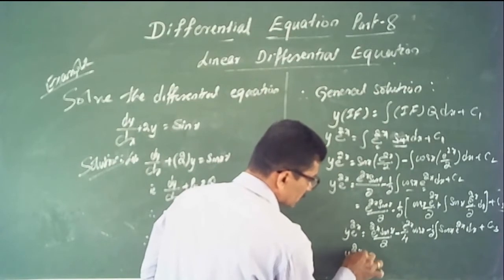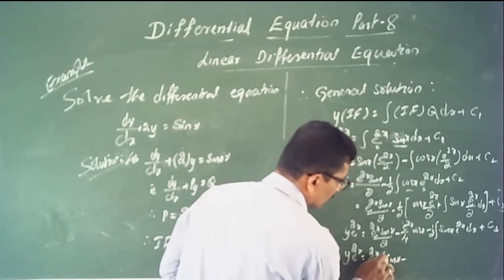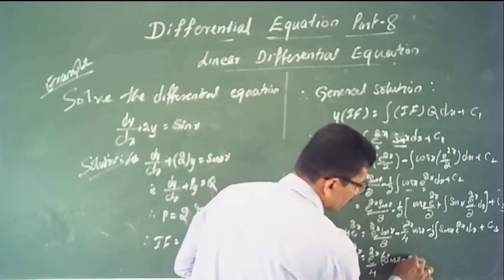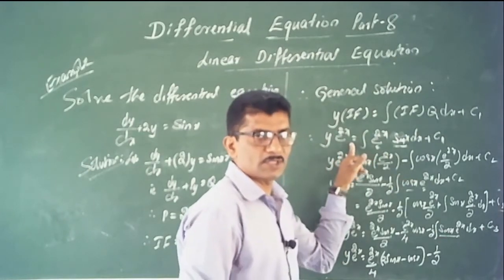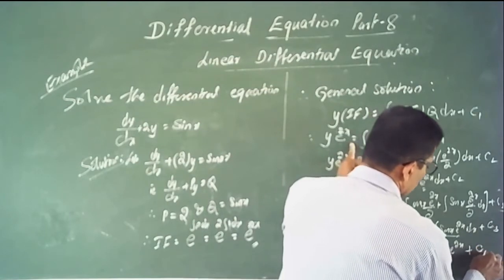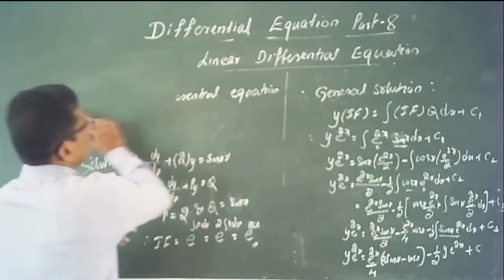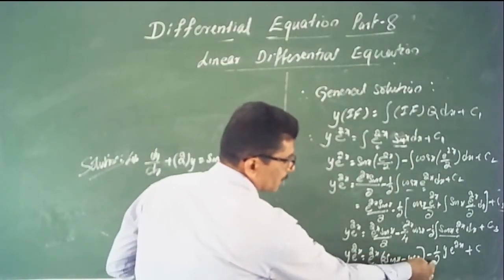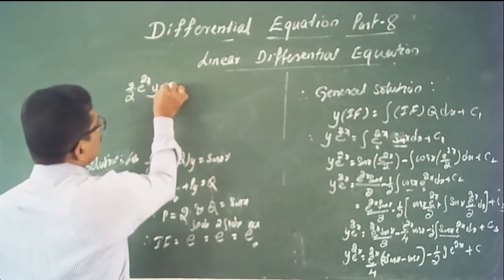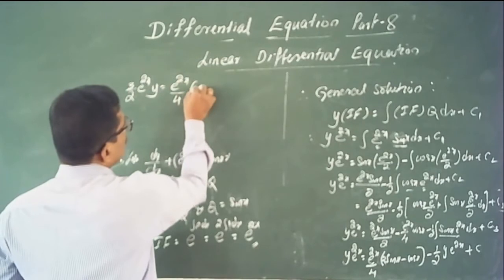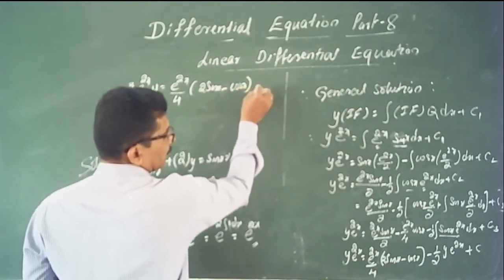Therefore y·e^(2x) = (e^(2x)·sin x)/2 − (e^(2x)·cos x)/4 − ½·y·e^(2x) + C. Bringing the y·e^(2x) term to the left: (3/2)·y·e^(2x) = e^(2x)(2 sin x − cos x)/4 + C. Multiplying through: 6y·e^(2x) = e^(2x)(2 sin x − cos x) + C.